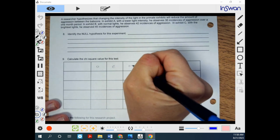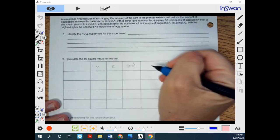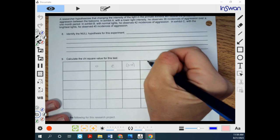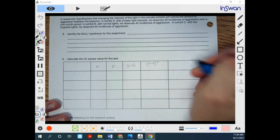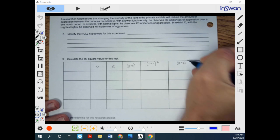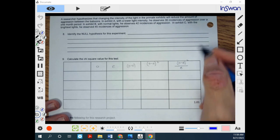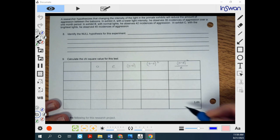We're going to subtract O minus E. O minus E squared. And then you take that value, O minus E squared, divided by expected. And eventually, we're going to sum them all up.